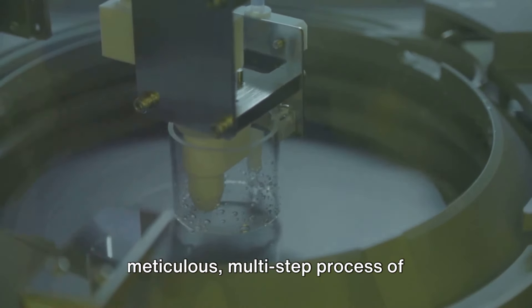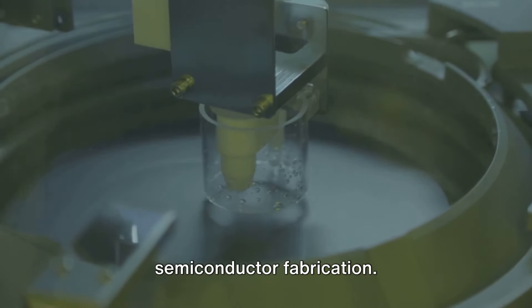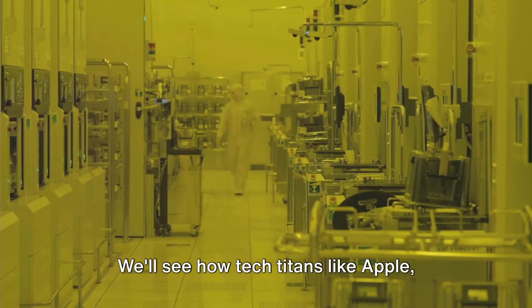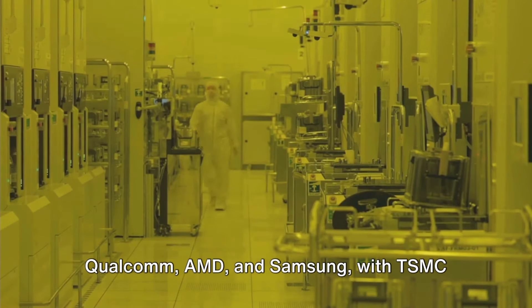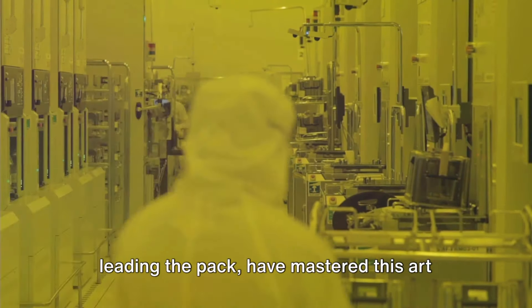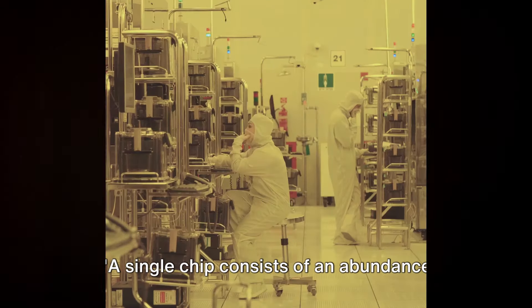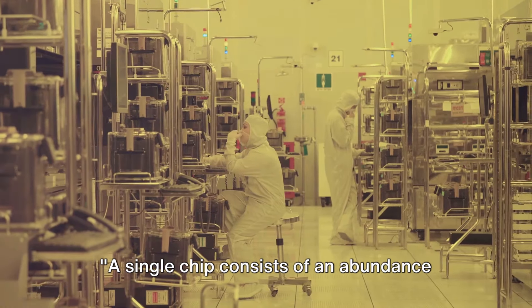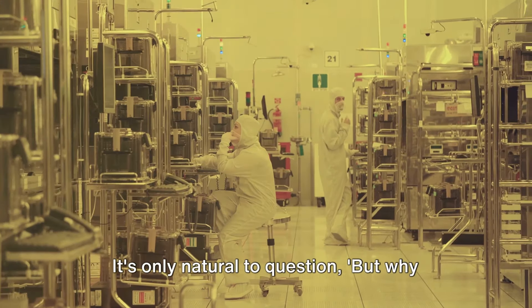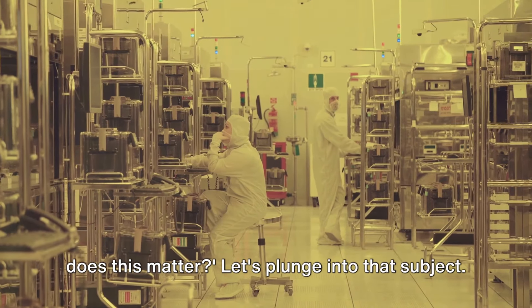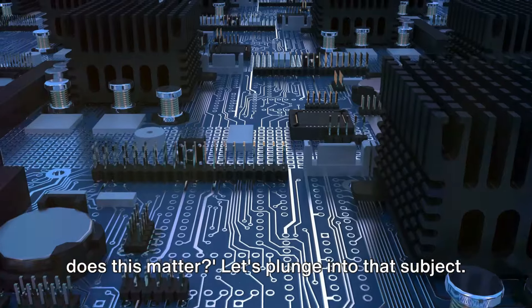Next up, we'll be exploring the meticulous, multi-step process of semiconductor fabrication. We'll see how tech titans like Apple, Qualcomm, AMD, and Samsung, with TSMC leading the pack, have mastered this art and science. So, buckle up and stay tuned. A single chip consists of an abundance of semiconductors. It's only natural to question, but why does this matter? Let's plunge into that subject.